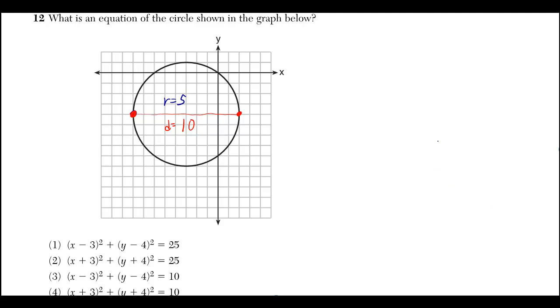What is the equation of the circle shown in the graph below? I've already figured out that the diameter is 10. Well then the radius would be 5.